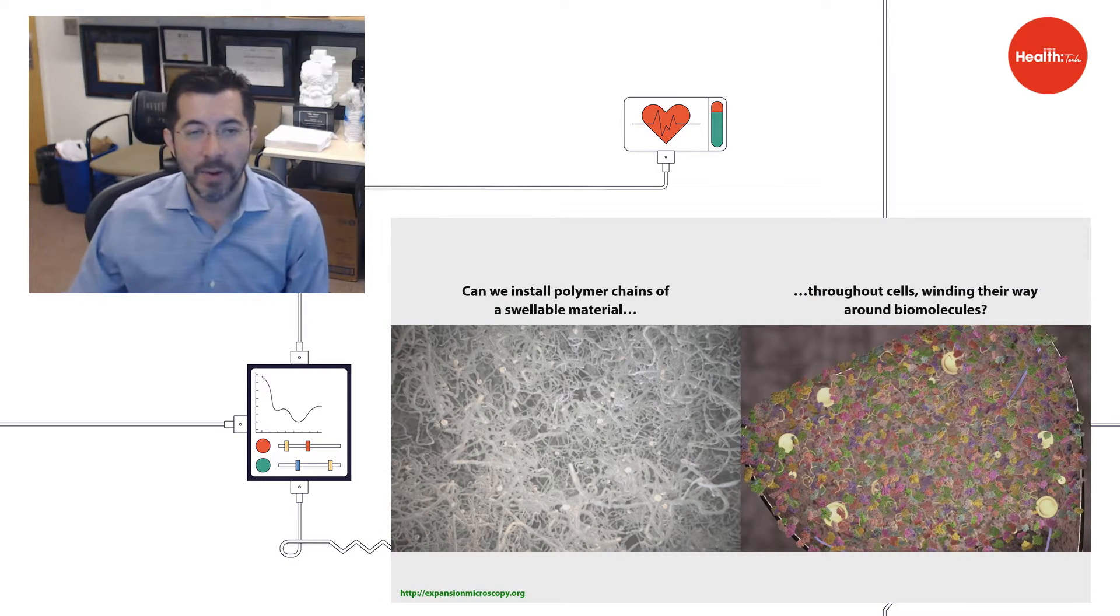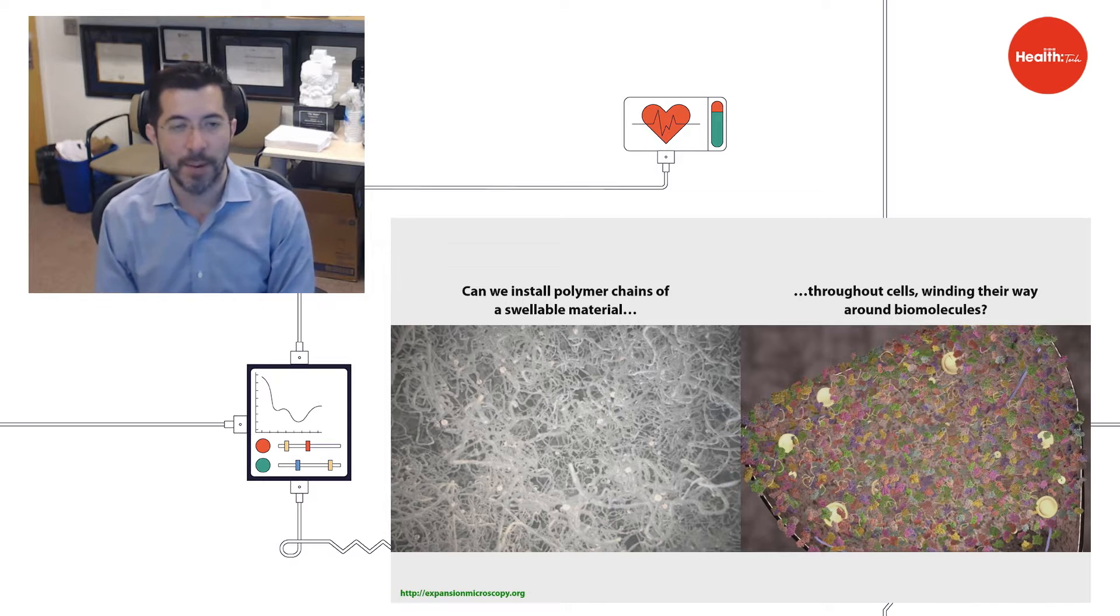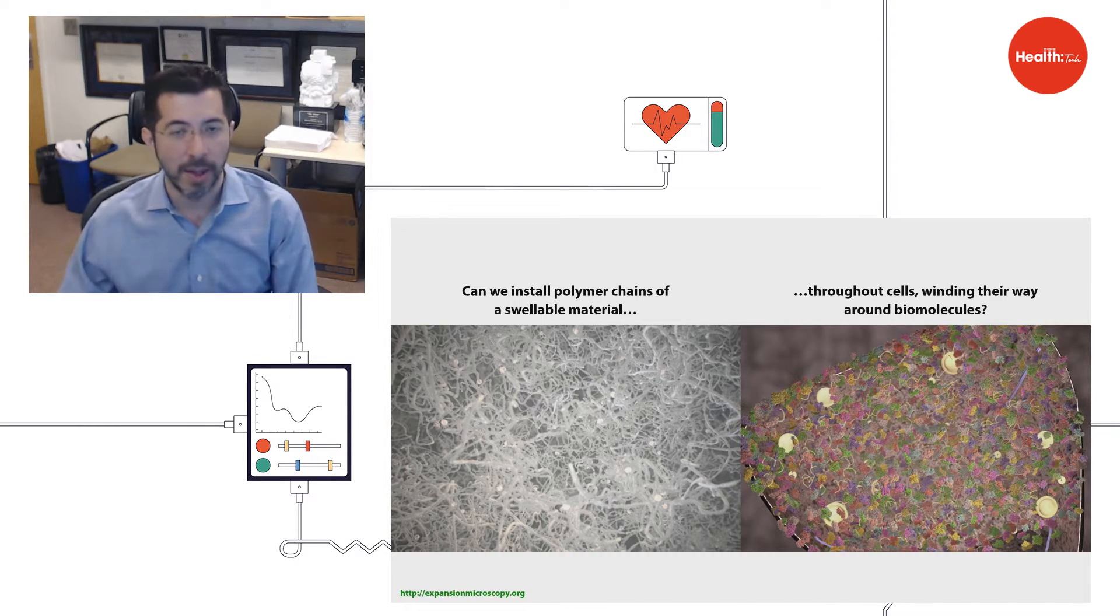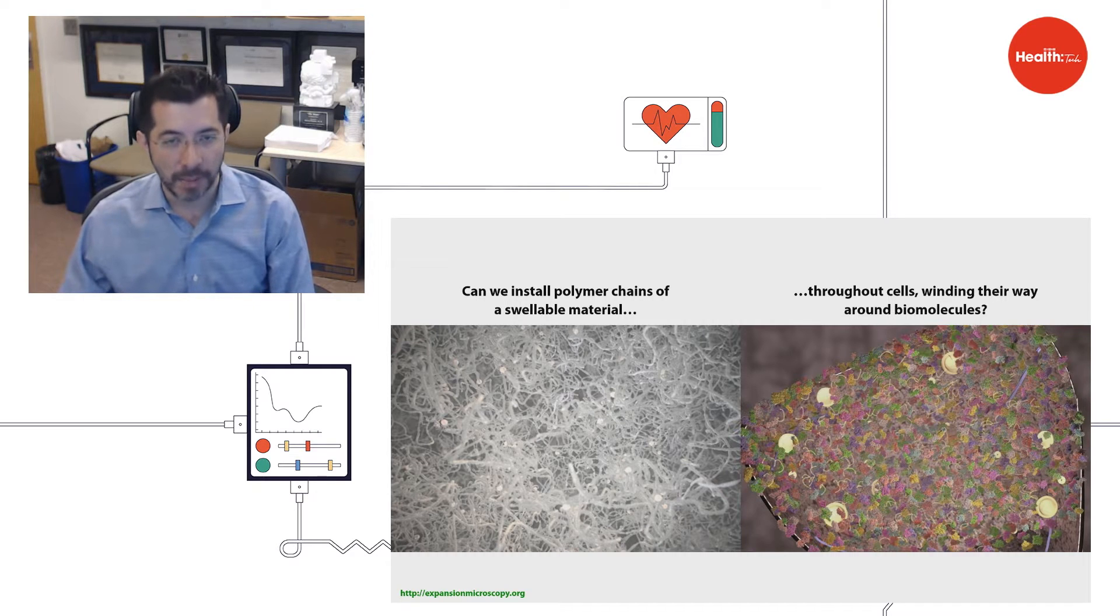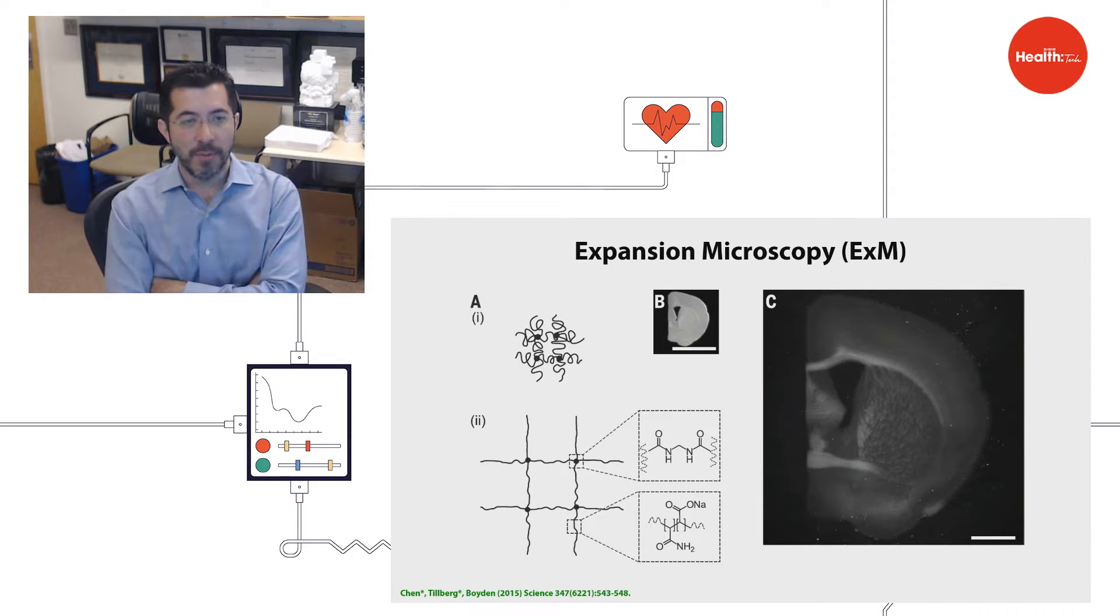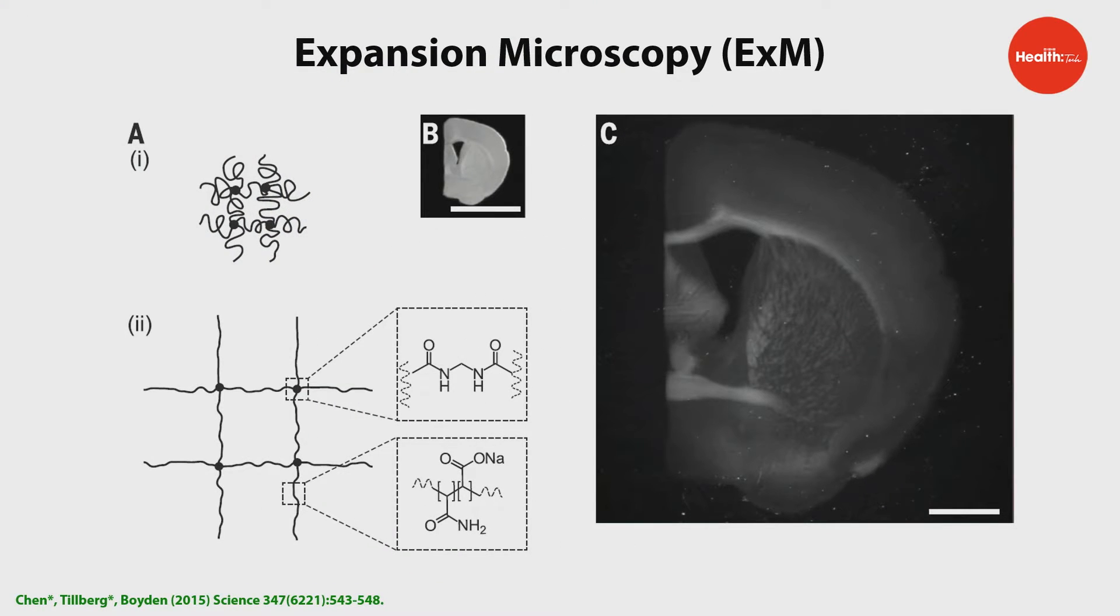Well, we developed a way to chemically synthesize dense spiderweb-like meshes of swellable polymer throughout the brain, inside brain cells and outside brain cells, in between biomolecules and around biomolecules. Do it just right, and we can physically make the brain bigger. So here, in panel B at the top, is a small piece of the mouse brain before we expand it. And in panel C, about a day and a half later, is the same piece of mouse brain tissue that has been magnified in volume by 100 fold, about four and a half times in each direction. The polymer starts out very dense, like in the upper left of the slide, and ends up quite expanded, like in the lower left hand of the slide.